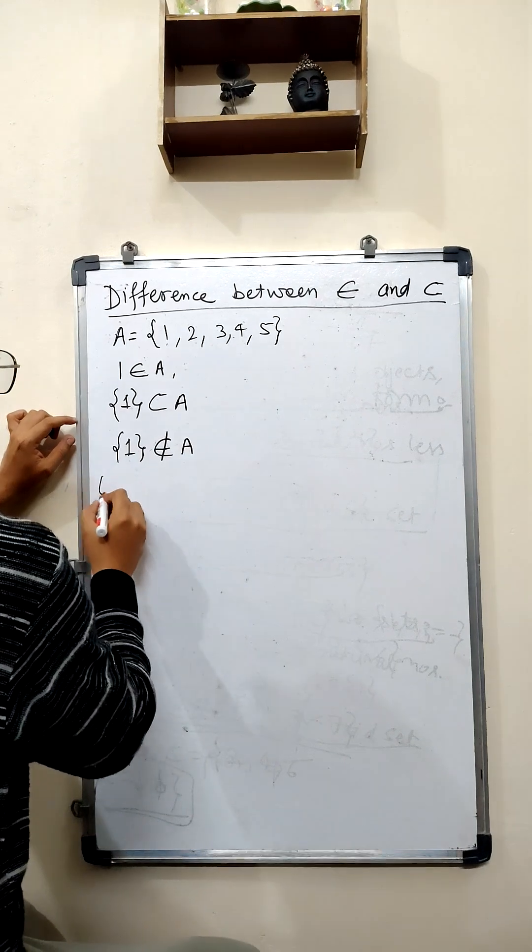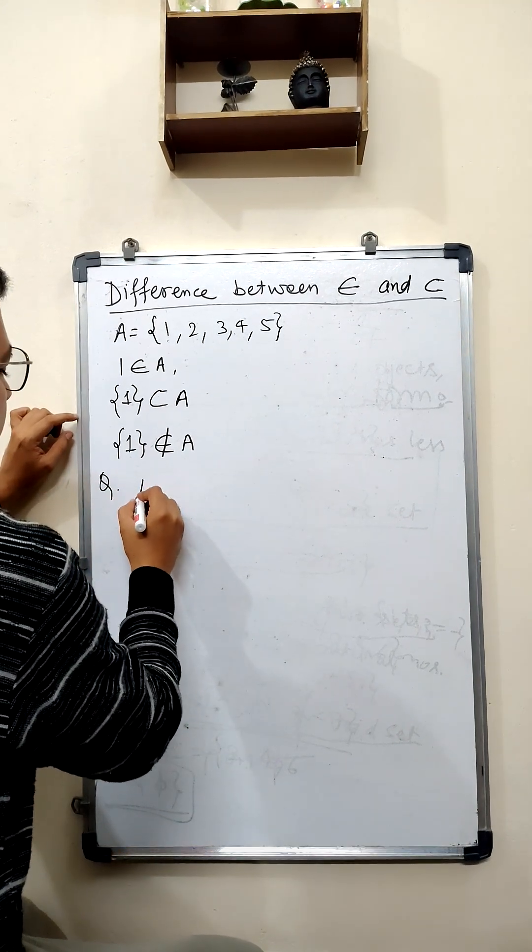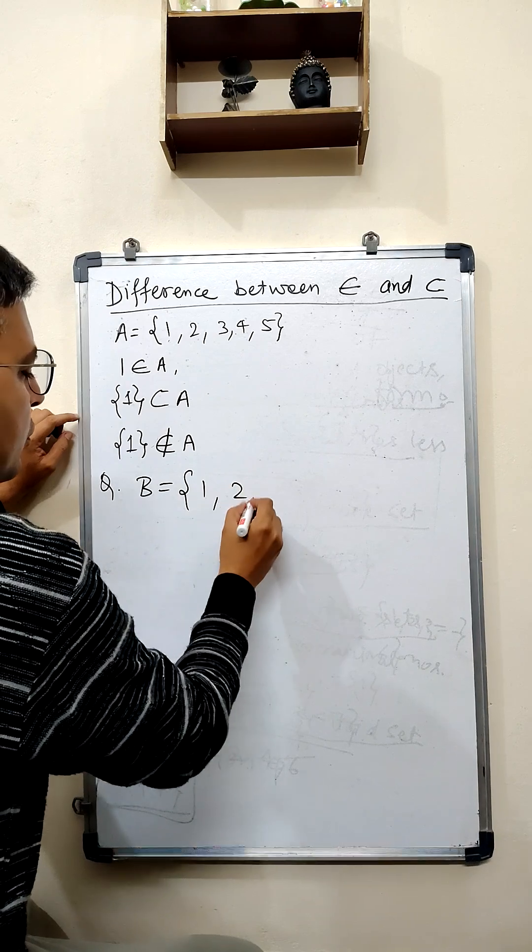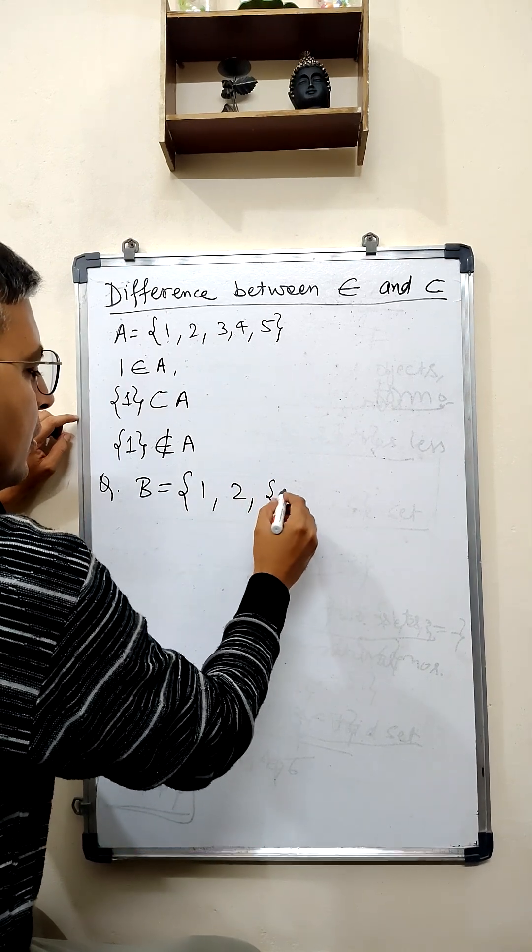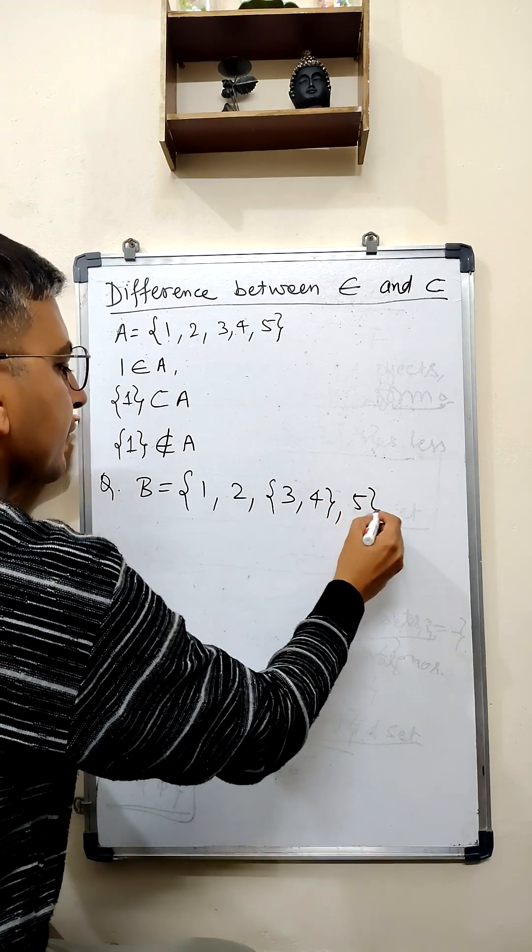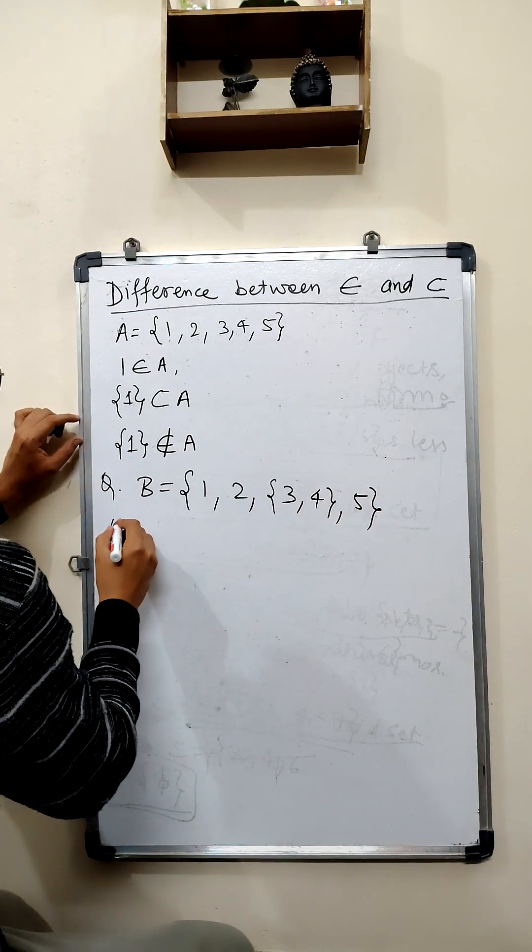So, there is a question for you, that suppose B is {1, 2, 3, 4, 5}. So, reply these questions.